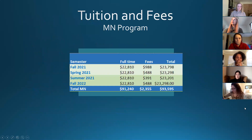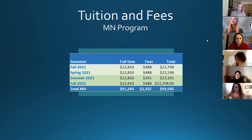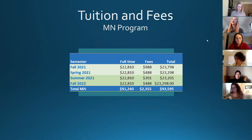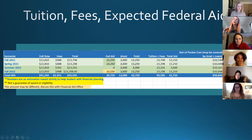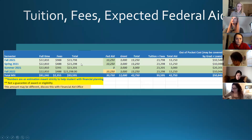Let's talk about your program specifically. This is an estimate of your tuition and fees. Since you're accelerated, you go fall, spring, summer, fall. Tuition is estimated at $22,810 for the program, with fees adjusted per semester. This gives you a total overview of what the program will cost with tuition and fees. Please don't panic — I'm going to talk about aid next. This is what you can expect to see on the bill each semester as a starting point.